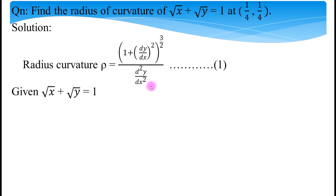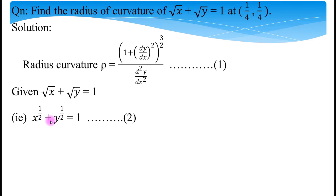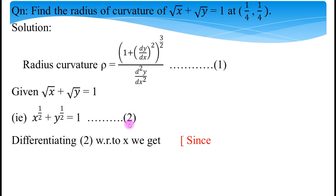The given equation is √x + √y = 1. For convenience, we rearrange it: √x can be written as x^(1/2) and √y as y^(1/2), so the equation becomes x^(1/2) + y^(1/2) = 1. Let us call this equation number 2. Now differentiate this equation with respect to x.